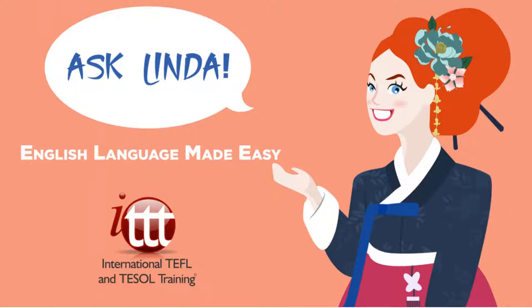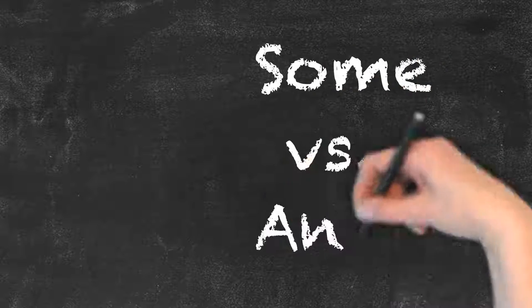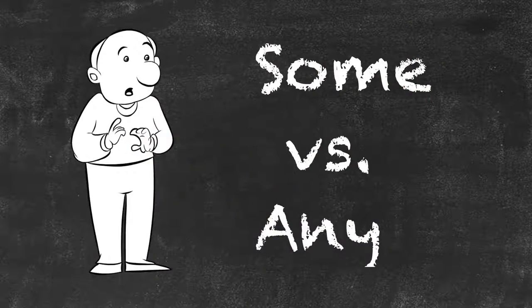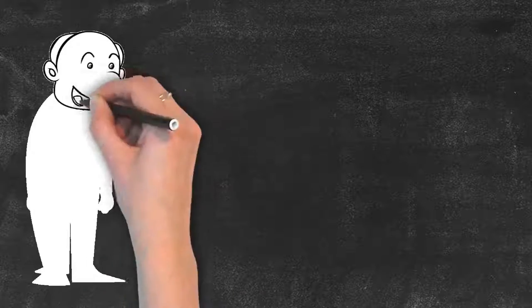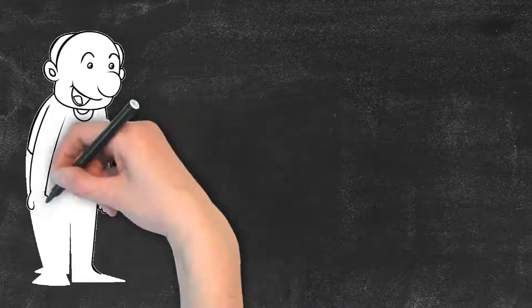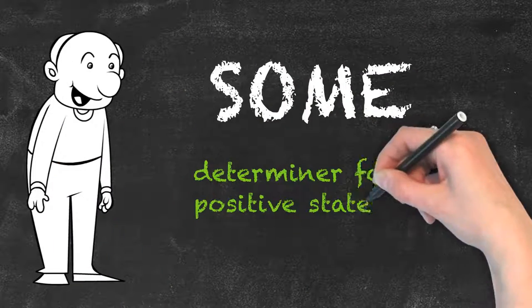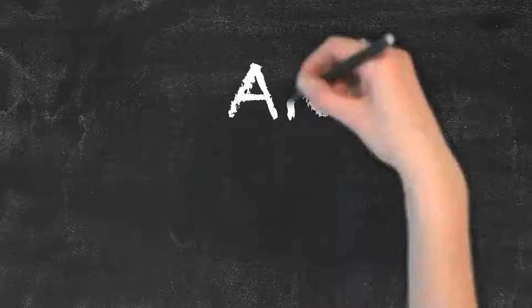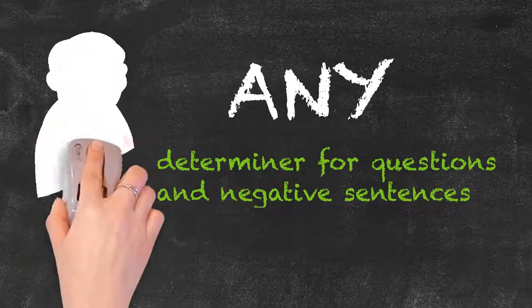Some versus any. Some and any are both determiners. They are used to talk about indefinite quantities or numbers when the exact quantity or number is not important. As a general rule, we use some for positive statements and any for questions and negative statements.